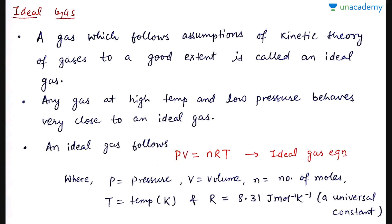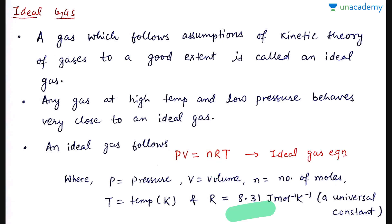Let's first take a quick recap of what we had done in the last lesson. In the last lesson we studied kinetic theory of gases assumptions and this was taught that if some gas follows those assumptions as much as possible, then we use an ideal gas. Any gas at high temperature and low pressure behaves very close to an ideal gas. An ideal gas always follows PV = nRT equation where p is pressure, v is volume, n is number of moles, T is temperature in kelvins. And if we put everything in this unit, then R is a universal constant which is 8.31 joule per mole per kelvin which is the same for all gases.